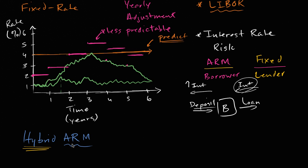And that's exactly what a hybrid ARM is. It's a mix of fixed and adjustable rate mortgage. So what do we mean by a mix of a fixed and adjustable rate mortgage? Well, you might hear something like a 5-1 hybrid ARM.